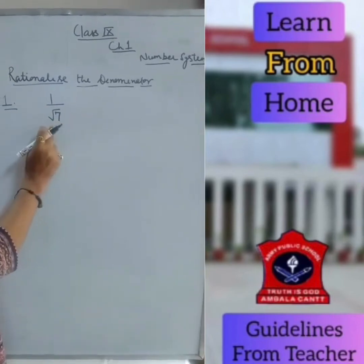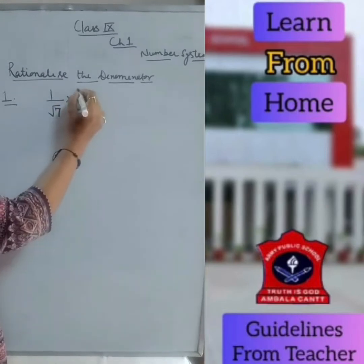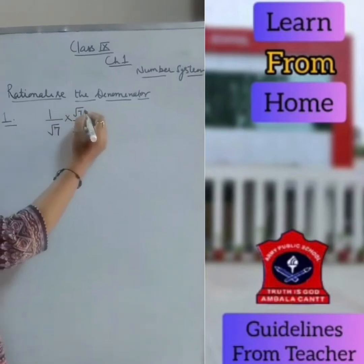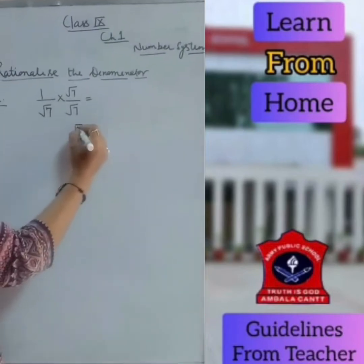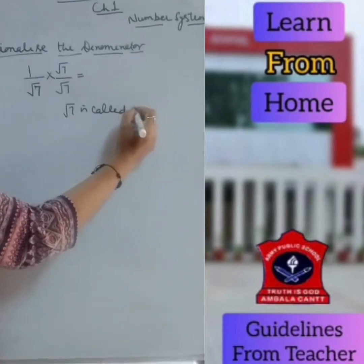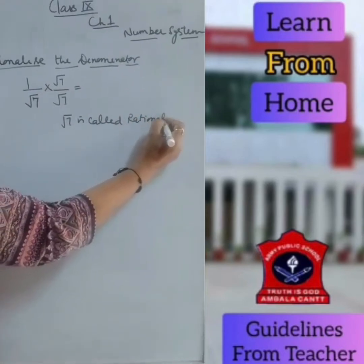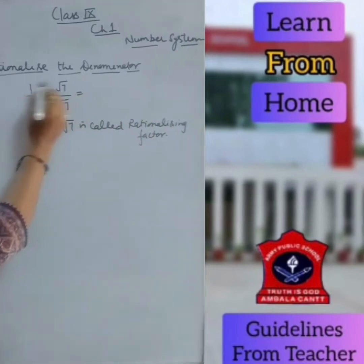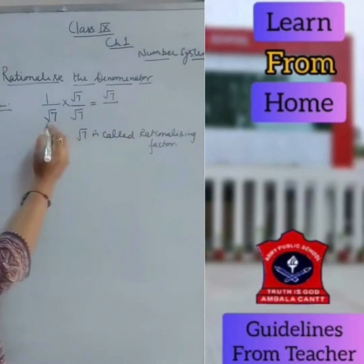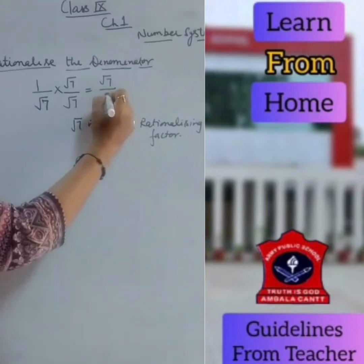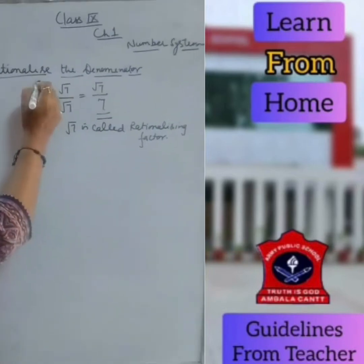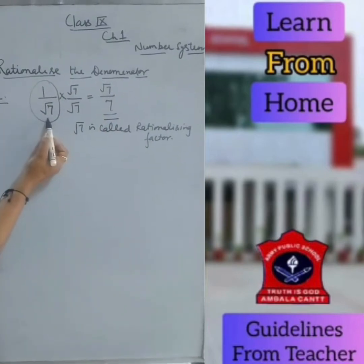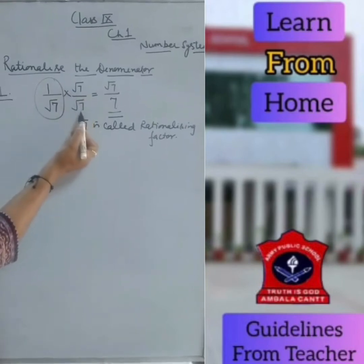For example, if you have 1 upon root 7, and you have a single term in the denominator, you will multiply and divide by the same term. So root 7 is called your rationalizing factor. Multiply the numerators to get root 7, and multiply the denominators: root 7 into root 7 is 7. So root 7 upon 7 is the simplest form of 1 upon root 7. This is called rationalizing the denominator — if you have a single term, multiply and divide by the same term.